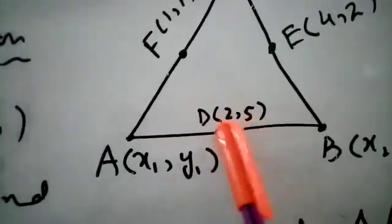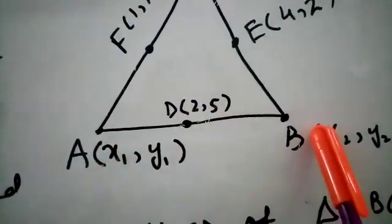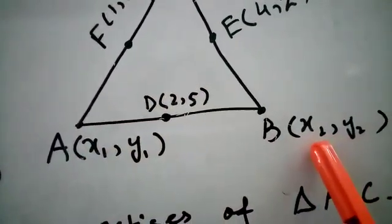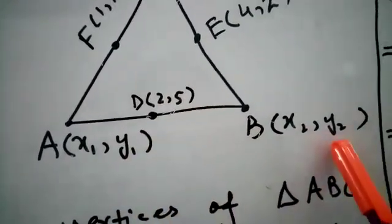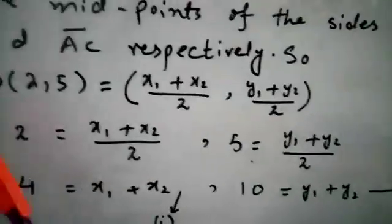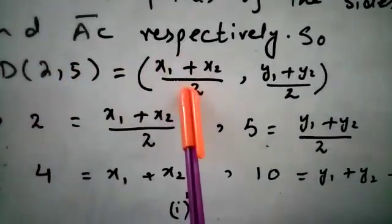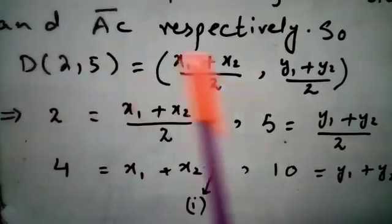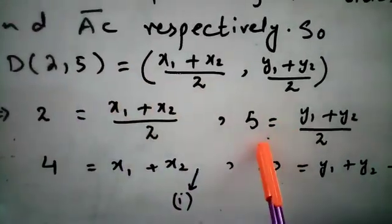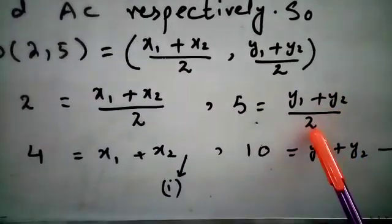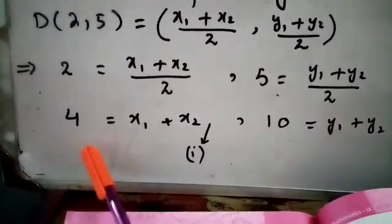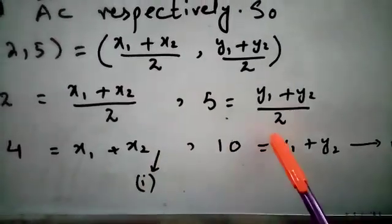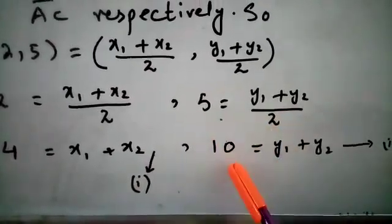First, midpoint D(2,5) of side AB. Using the midpoint formula, D(2,5) equals (x1 + x2)/2 , (y1 + y2)/2. Comparing x-coordinates: 2 = (x1 + x2)/2. By cross multiplication: 4 = x1 + x2 — this is equation number 1. Comparing y-coordinates: 5 = (y1 + y2)/2. By cross multiplication: 10 = y1 + y2 — this is equation number 2.